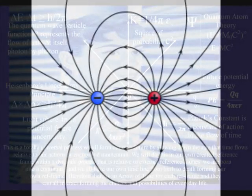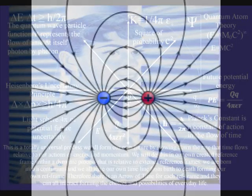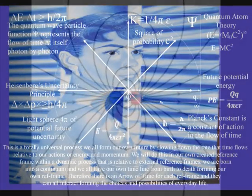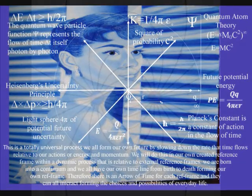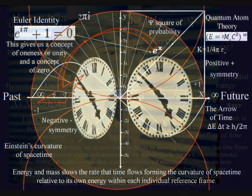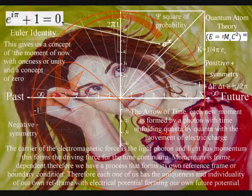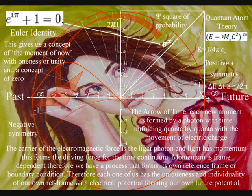Modern physics has no deep explanation of the nature of charge, but in this theory positive and negative charge is merely a deficiency of the other within the same physical process. The deficiency is a difference in the rate that time flows within an individual reference frame or system, and the physical process is time itself, as a process of continuous energy exchange, or what I like to call continuous creation, forming the continuum of time.